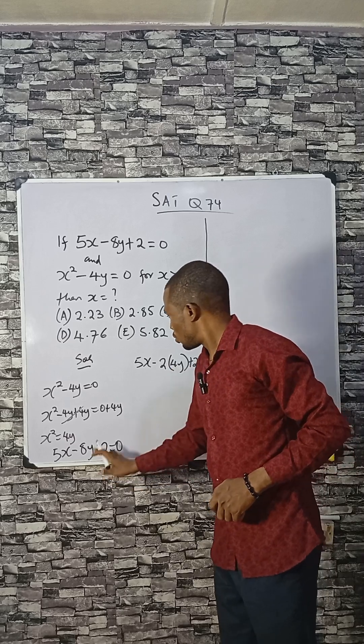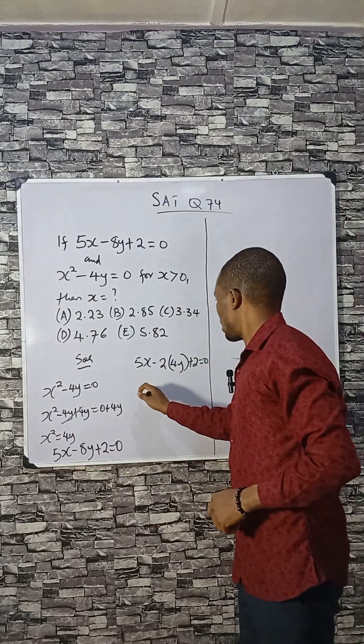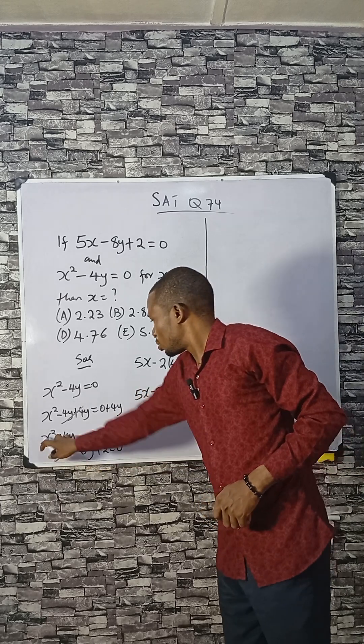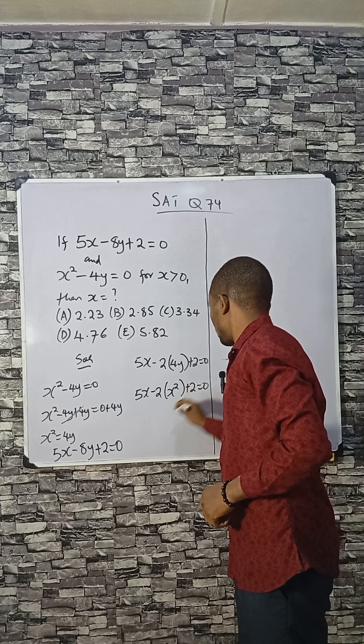I want to replace 4y with x² here. So I have 5x - 2(x²) + 2 = 0.